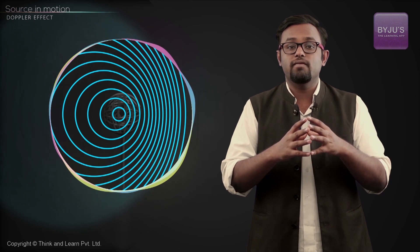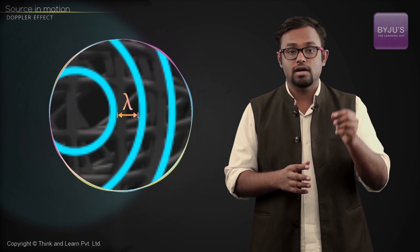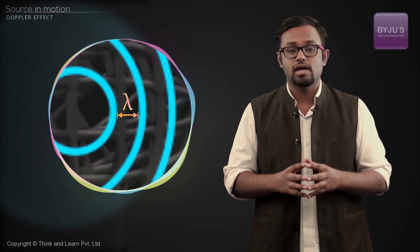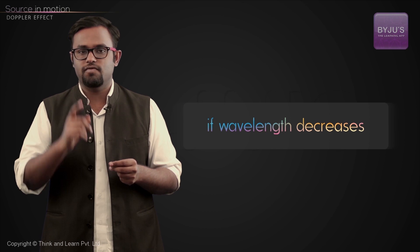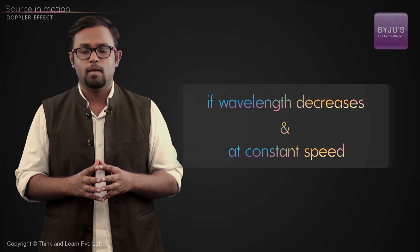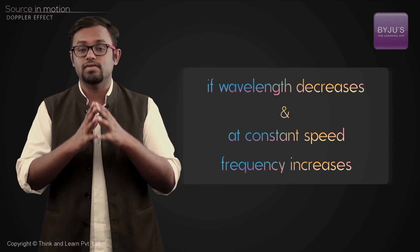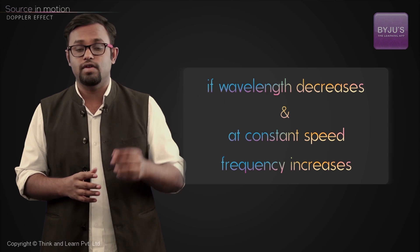The listener would say the waves are coming at the same speed, but they have bunched up together, so they are coming more frequently. In other words, the wavelength — the distance between any two consecutive crests — has decreased. And if the wavelength decreases while the speed remains constant, the frequency increases. So the listener observes an increase in frequency.